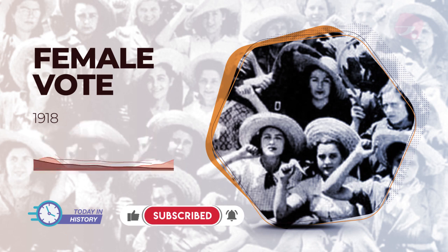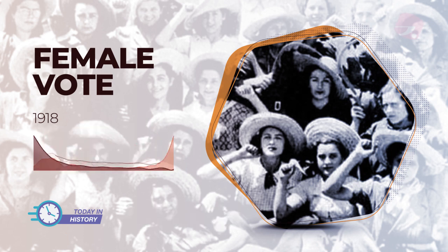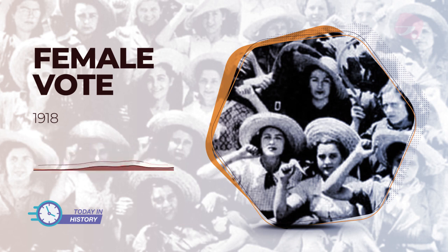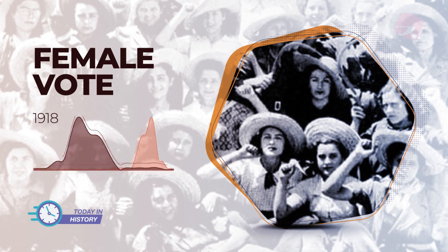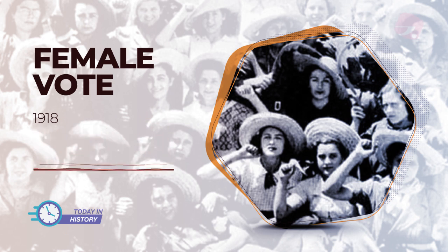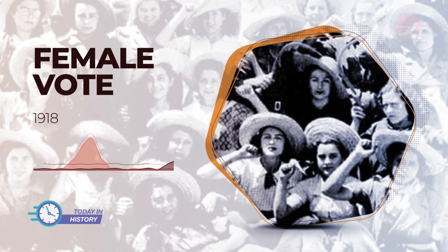The First World War ended this movement. However, the conflict created the conditions for women to demonstrate their value and contribution to their homeland, which resulted in the recognition of their electoral rights. Thus, on February 6, 1918, British women over 30 were allowed to vote. In 1920, the age was reduced to 21 years.